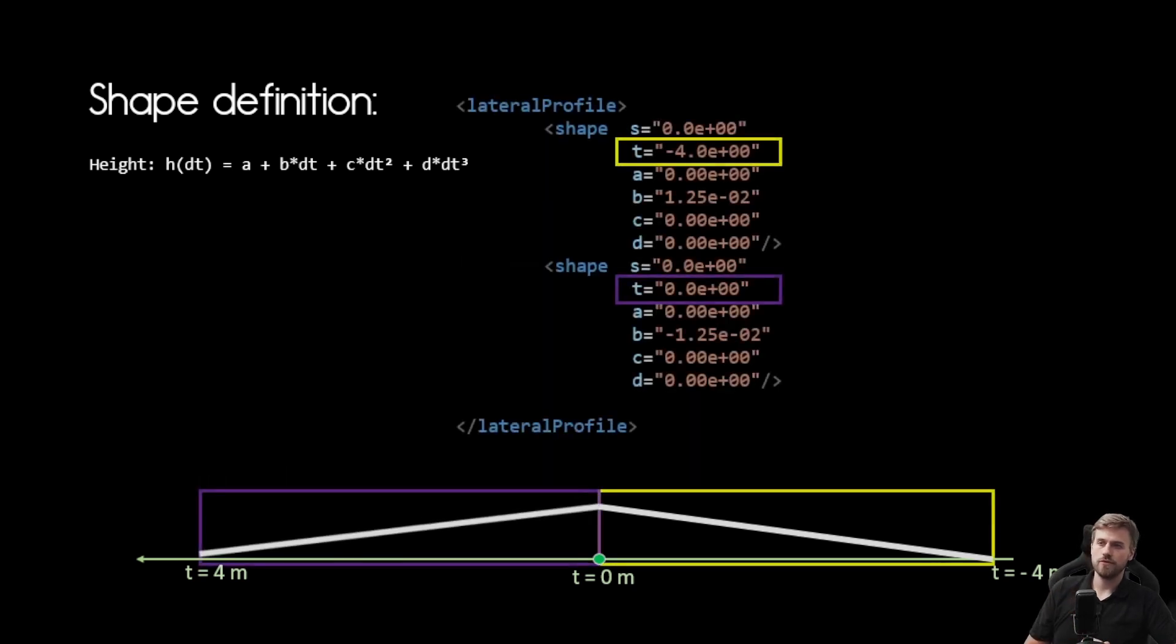If we want to create a crossfall like in the very first picture you saw then we can add a second shape to our shape definitions. And the interesting part here is that the second shape is also valid at the same S coordinate as the previous shape. But the difference here is that we have another T coordinate that tells us from where along the T axis this shape entry is valid from. And what we can see here that the first shape entry represents the yellow box and the second one represents the purple box. And you can see that parameter B in the purple box is the direct opposite to the one in the yellow box and by that creating this crossfall here.